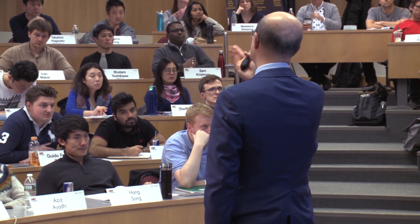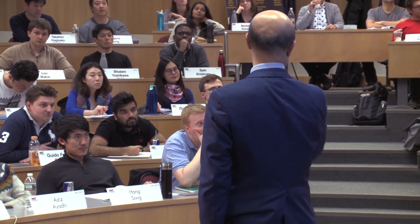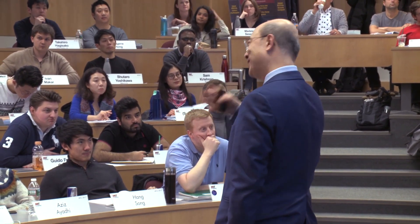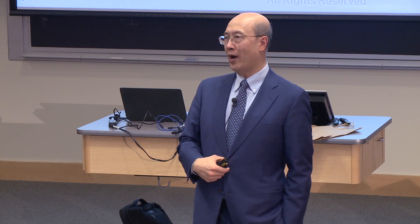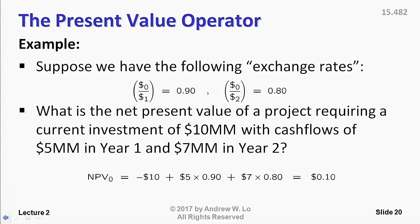Here's a very simple example. Given a couple of exchange rates, you can value a project requiring an investment of $10 million and getting cash flows of $5 million in year one and $7 million in year two. Once you put it in this framework, it's pretty clear — this gives you $100,000 of net present value. That's a good thing, so you should take it.